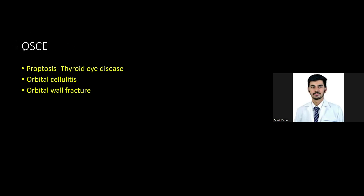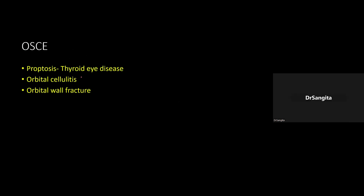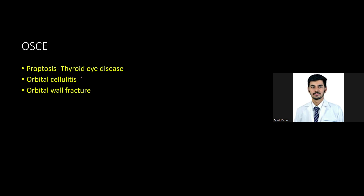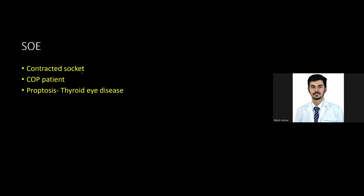In the OSCE, based on my research, the three topics most repeatedly asked are thyroid eye disease (the most common), orbital cellulitis, and orbital wall fractures — topics with systemic implications. For the clinical station, they won't give you a patient with active inflammation or one posted for surgery. The most commonly given patients are those with a contracted socket, a customized ocular prosthesis, or inactive thyroid eye disease.